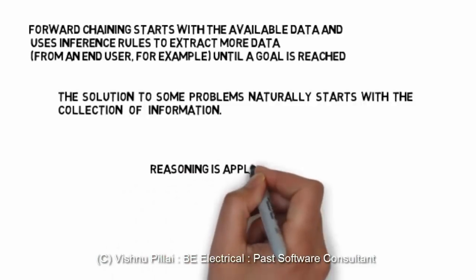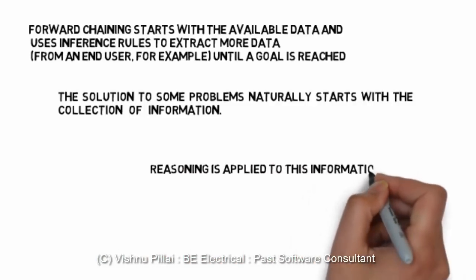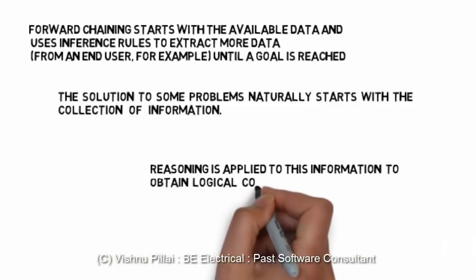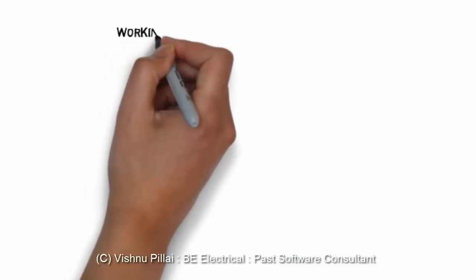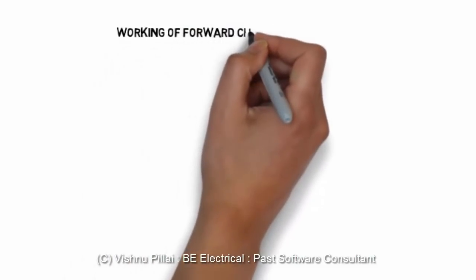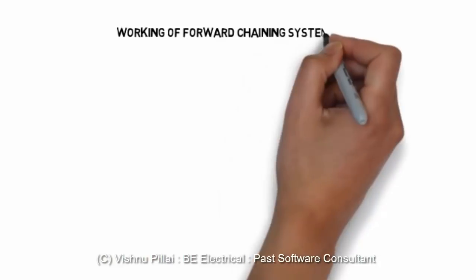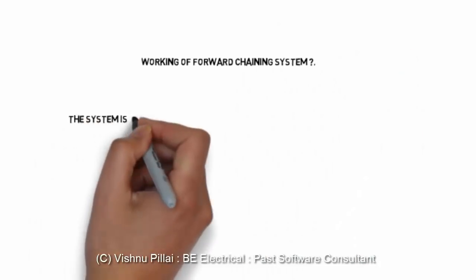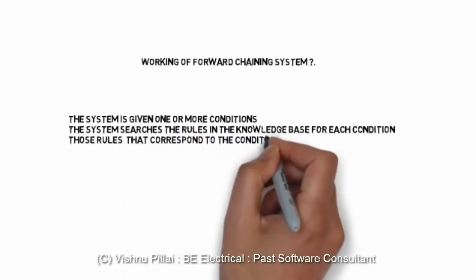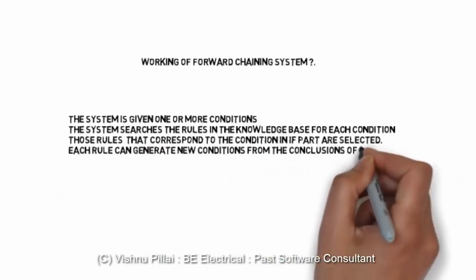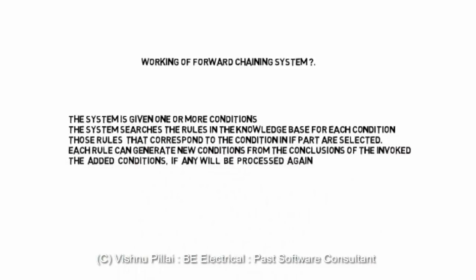The solution to a problem naturally starts with the collection of information. First you have a problem, you collect some information, and that information will lead to the solution. Reasoning is applied to this information to obtain logical operations. Before designing a system, you collect certain information based on which you write certain rules, and these rules are fed into the knowledge base. Then the forward chaining method is used to derive algorithms based on those rules.